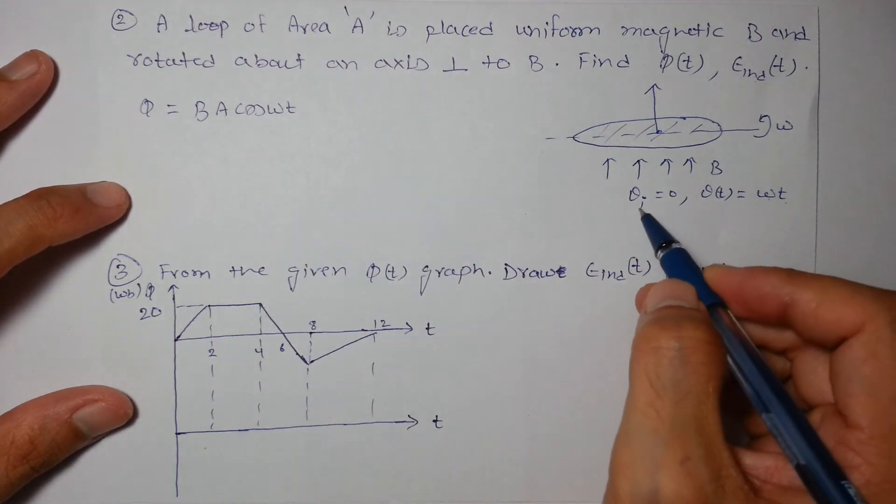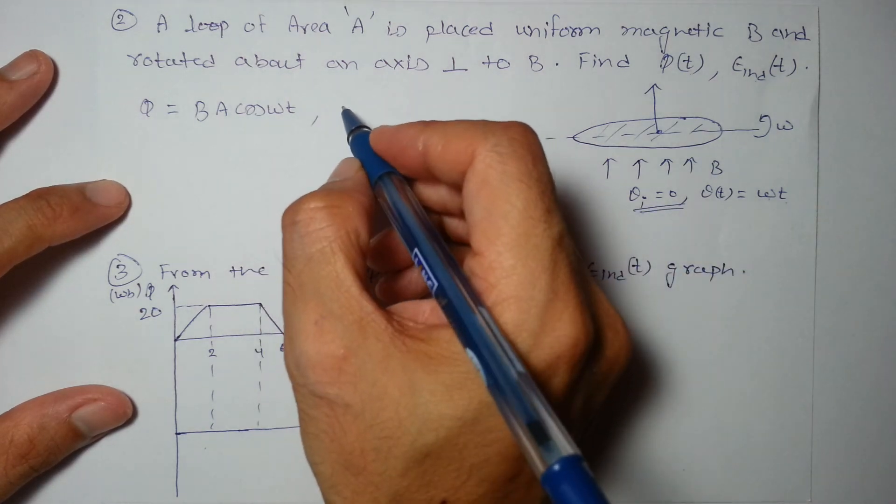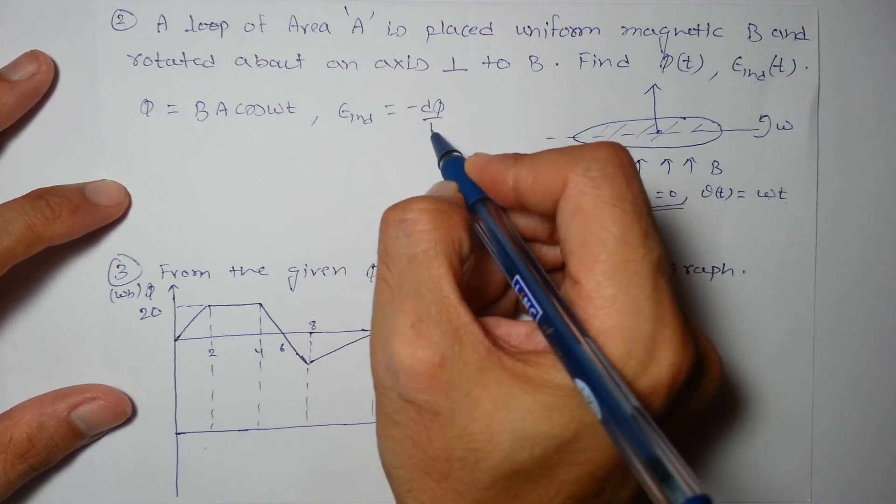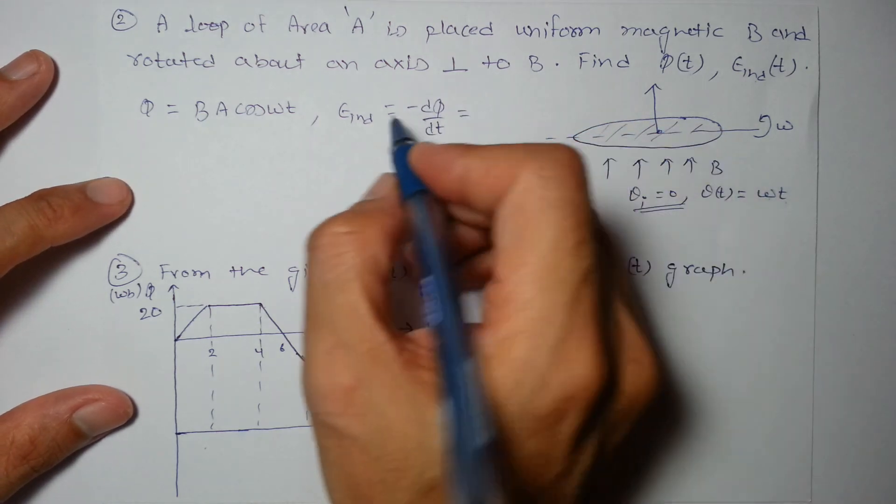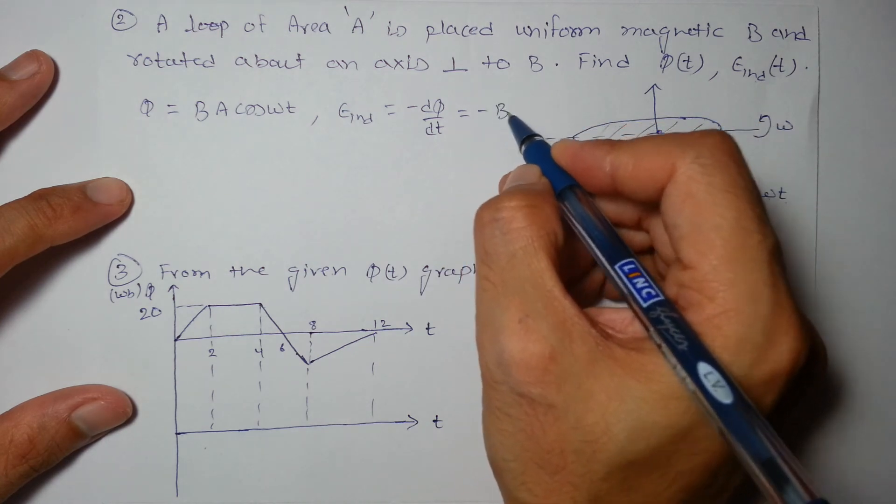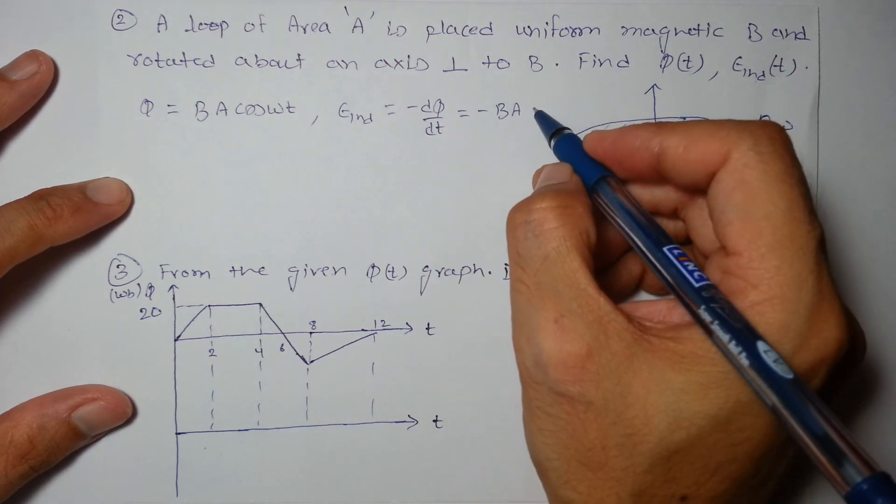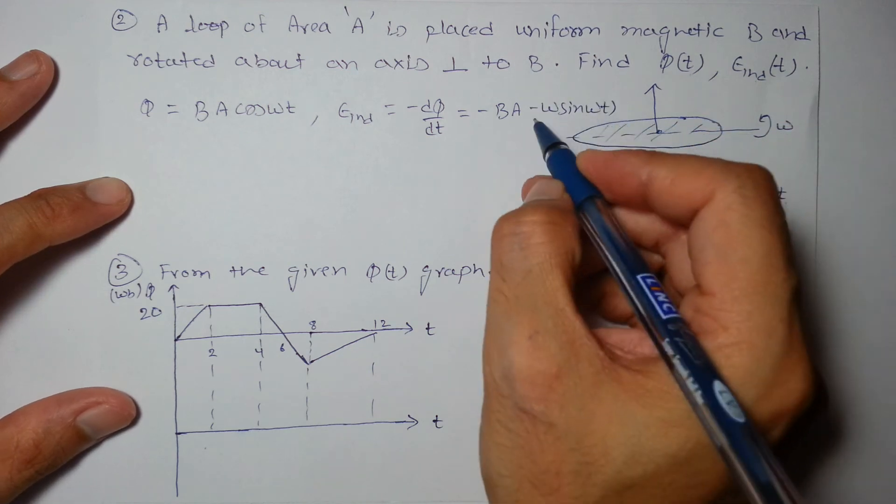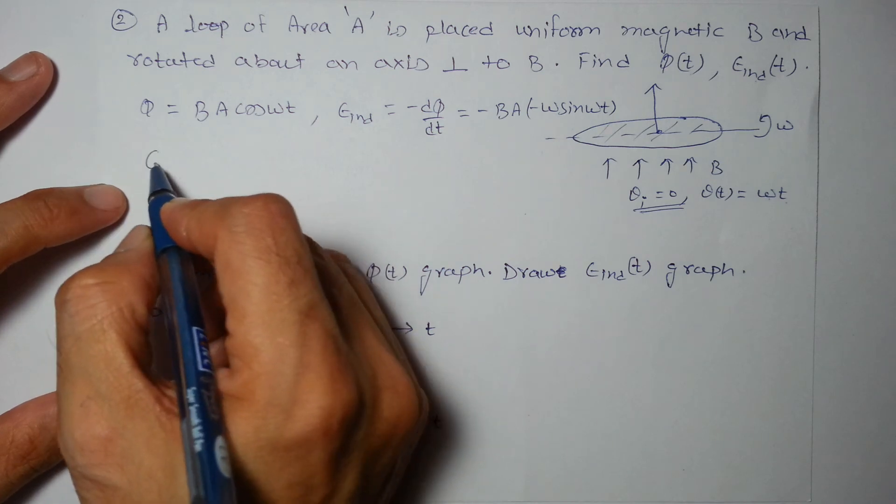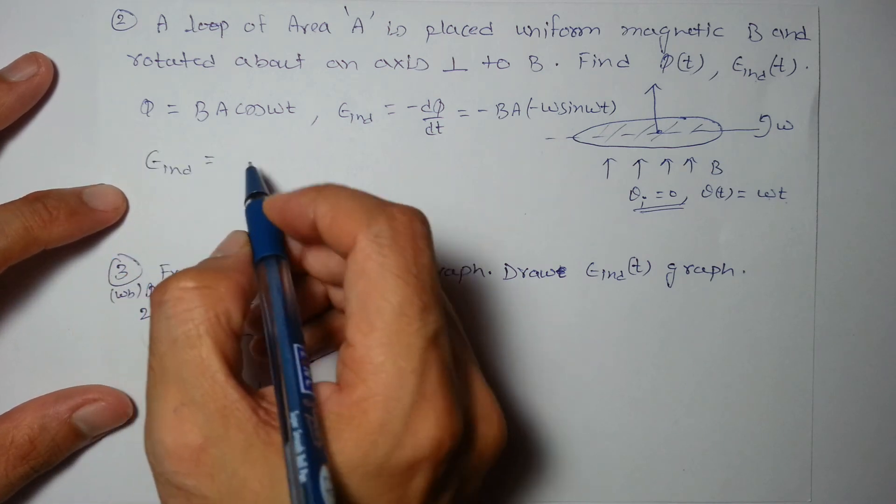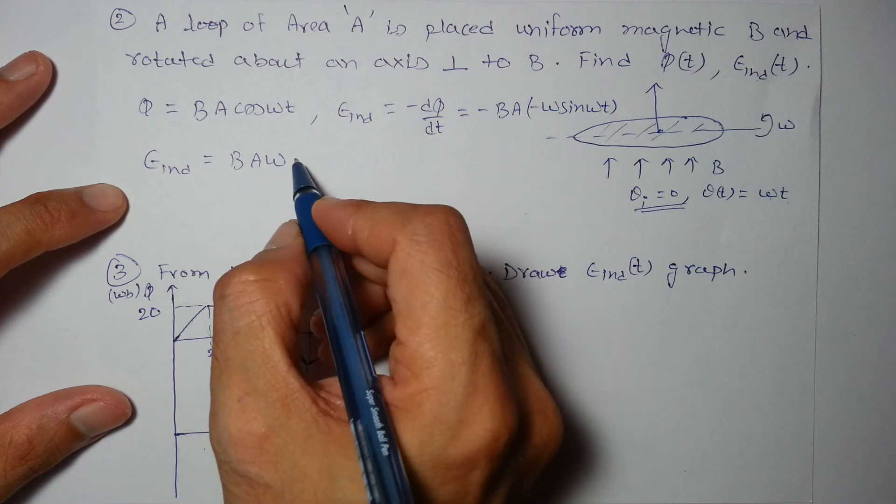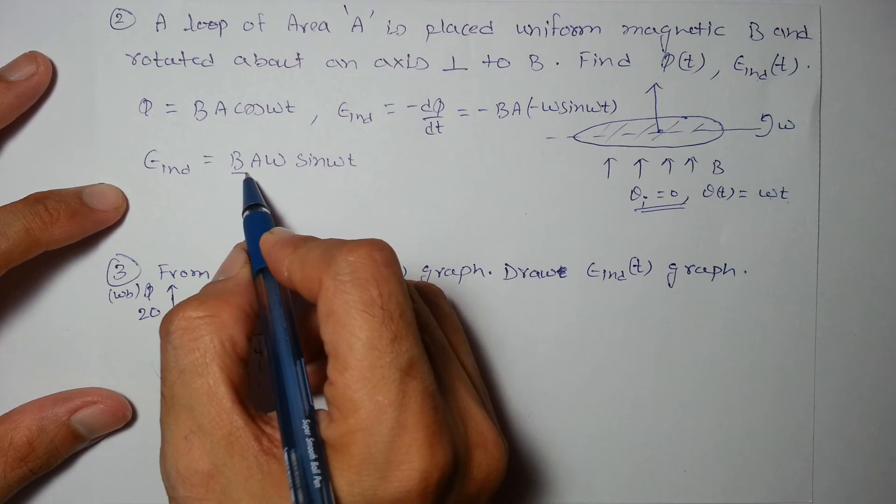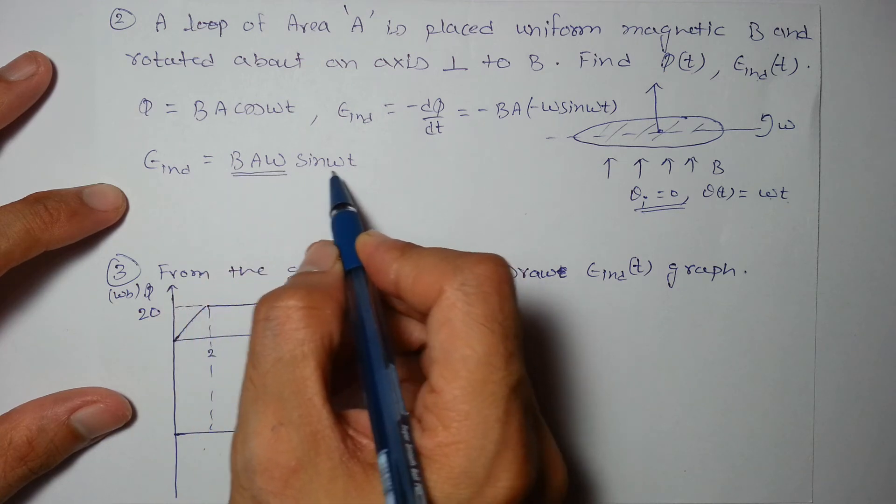And the EMF induced will be -dΦ/dt. So we will get -BA × differentiation of cos(ωt) will give you -ω sin(ωt). So what we are getting here: EMF induced is BAω sin(ωt). That is an alternating EMF we are getting, that is the magnitude and that is the oscillatory function.